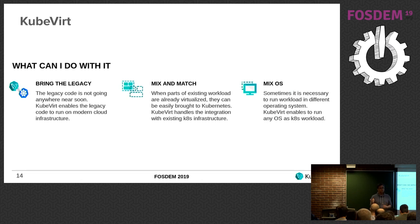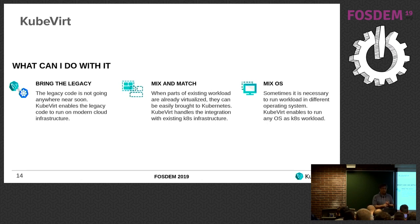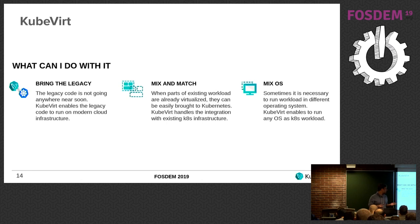We don't want to maintain two infrastructures, so we mix and match by adding virtualization on top of Kubernetes — getting all the Kubernetes advantages such as scheduling, storage, and networking. Using KubeVirt and running virtual machines on a Kubernetes cluster, we can also run any OS we want on top of Kubernetes.